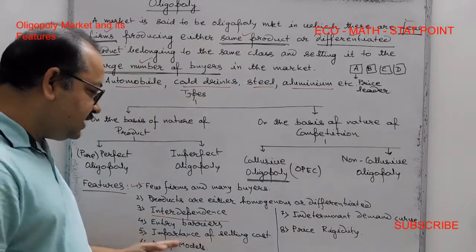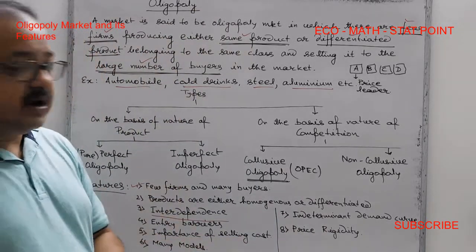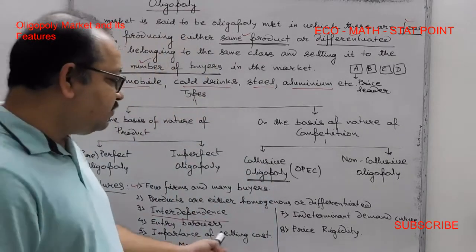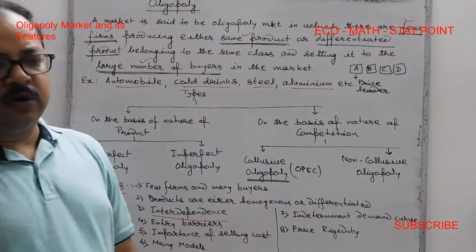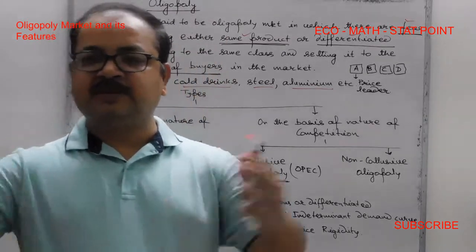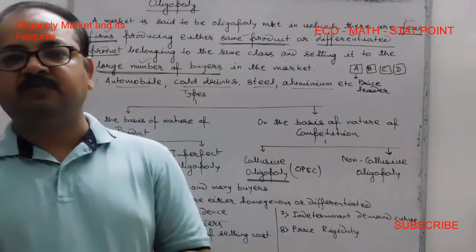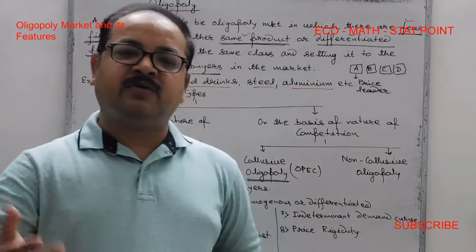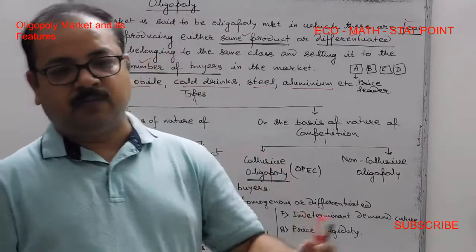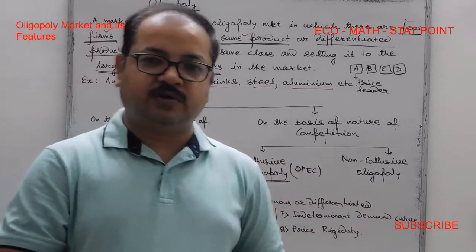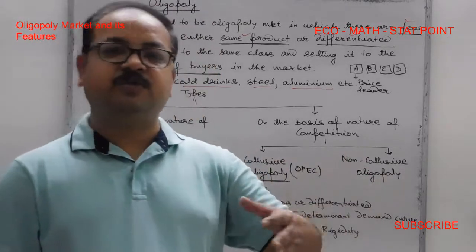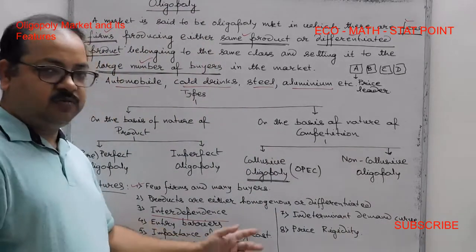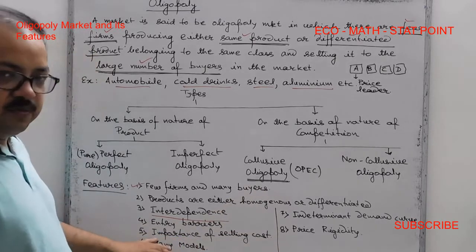The fifth feature is the importance of selling cost. This includes promotion costs and advertisement costs. In the oligopoly market, firms compete for market share through advertising and promotional activities, making selling costs a significant part of business strategy.